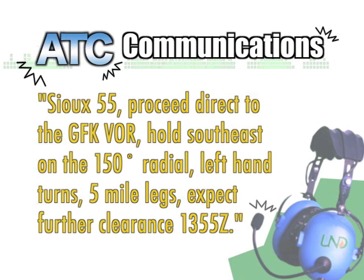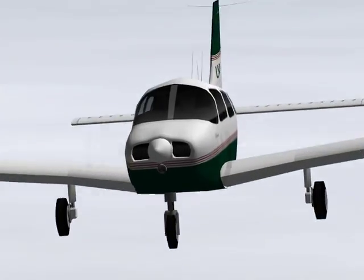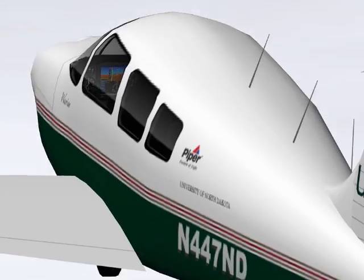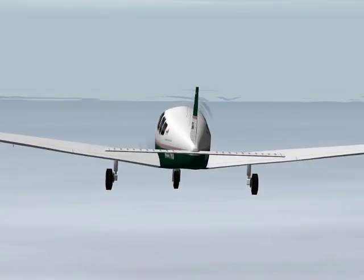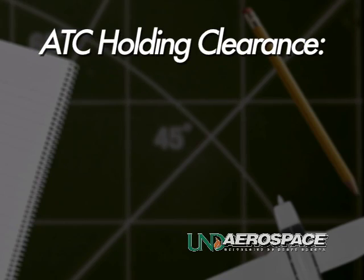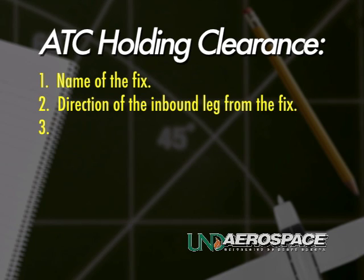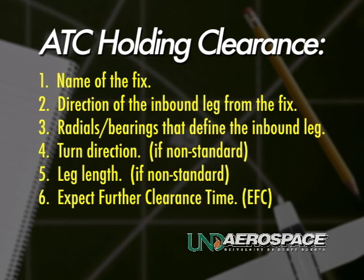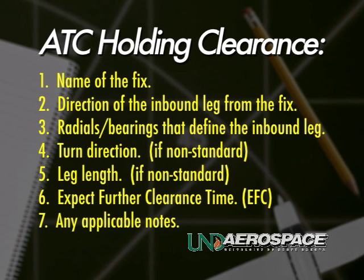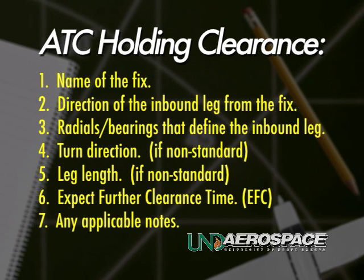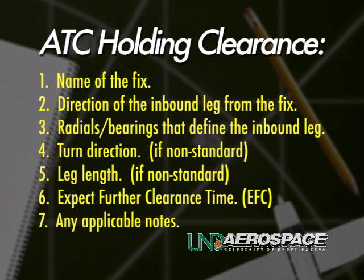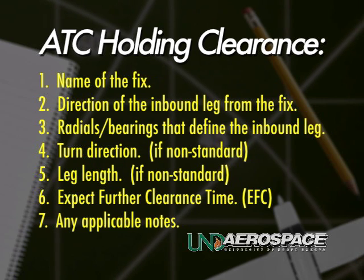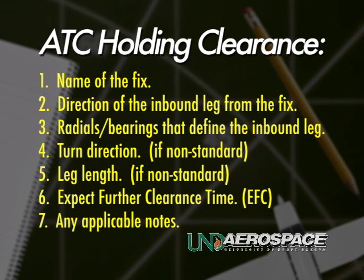In this clearance, most likely due to operational restrictions, ATC has deemed it necessary to clear the pilot for a non-published and non-standard hold. An ATC holding clearance will always include the name of the fix, the cardinal direction of the inbound leg from the fix, any applicable radials or bearings that define that inbound leg, turn direction if non-standard, leg length if non-standard, the expect further clearance time, and any further applicable notes.